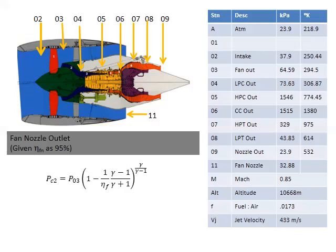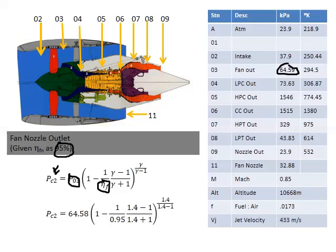We can modify the critical pressure formula to establish the critical pressure in the fan. So when we plug in the numbers for P3, which we had seen previously was 64 kilopascals, and we know that the efficiency of the fan was 95%, so when we plug those numbers in we get a value for the critical pressure of 32.88 kilopascals.